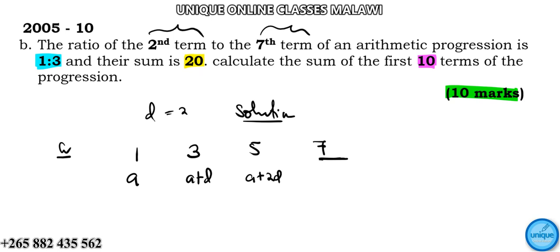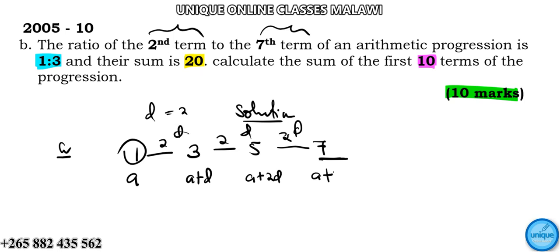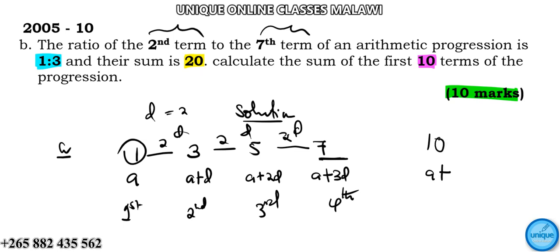Starting from the first term and adding the common difference repeatedly: difference number one, difference number two, difference number three — giving us the 4th, 5th, 6th terms. So 'a seven' means 'a plus 6d'. The general formula for the nth term is 'a plus (n minus 1)d'. For example, term number 10 is 'a plus 9d', and term number 100 is 'a plus 99d'.